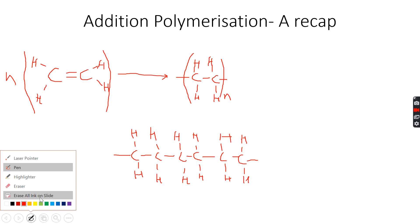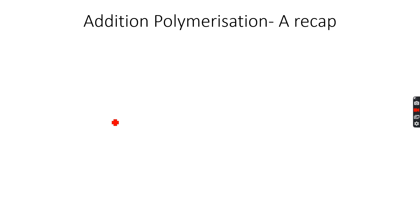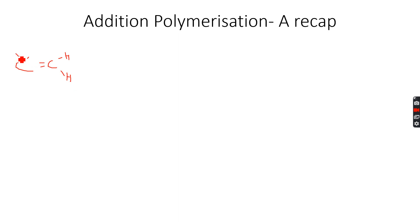One new thing in addition polymerization is co-polymers. Co-polymers are formed from two or more different monomers combined to form a polymer. For example, instead of just one monomer like ethene, we can have two different monomers — such as ethene as one monomer and vinyl chloride, also known as chloroethene, as the other monomer.